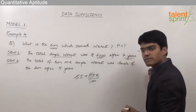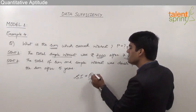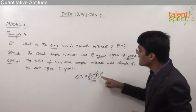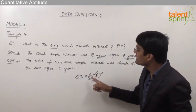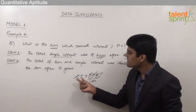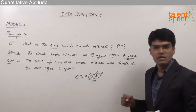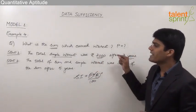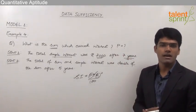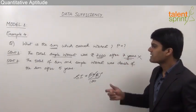From Statement 1, SI is known to us and the time period is 7 years. But the rate of interest is not known. Unless we know the value of R, the principal cannot be calculated — to find P from the equation, we need SI, T, and R. SI and T are given in Statement 1, but R is not. Therefore, Statement 1 alone is not sufficient to answer the question.